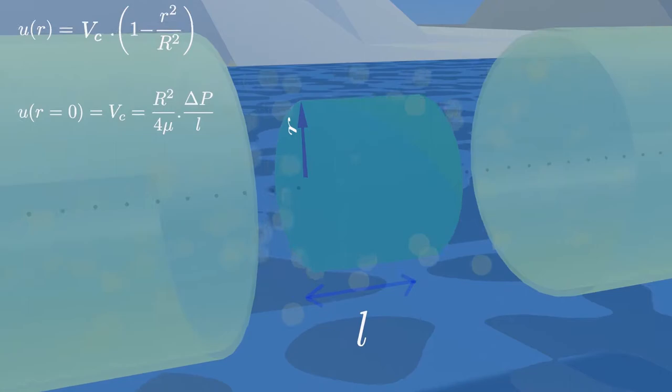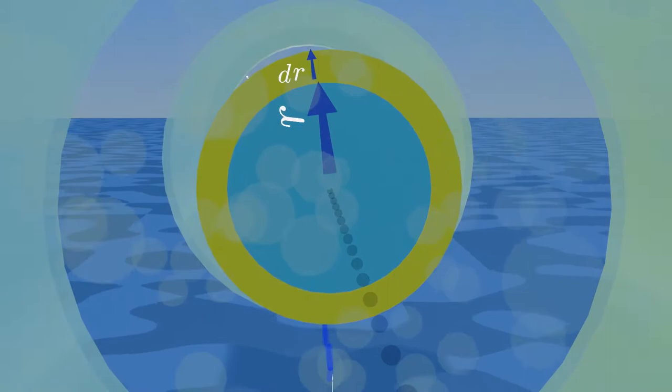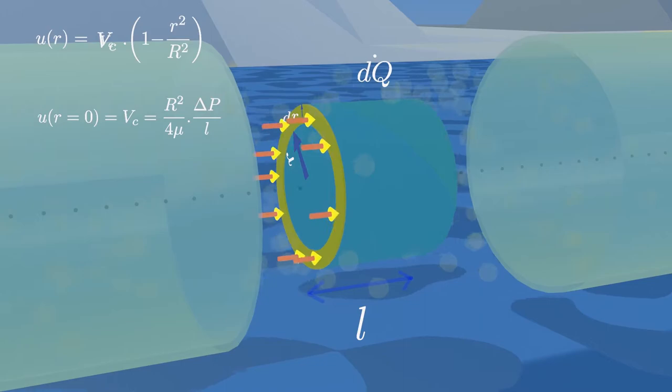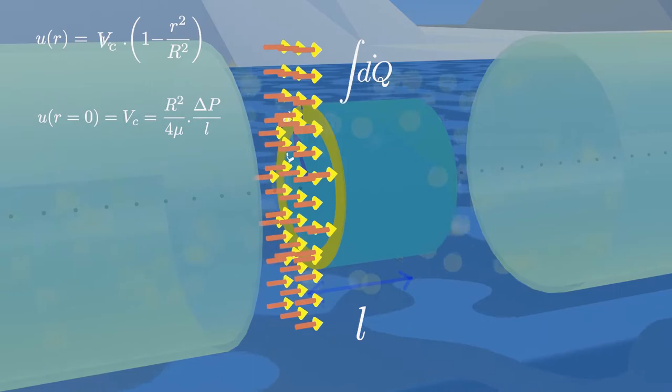Now, to derive the flow rate, we consider a ring with the infinitesimal thickness dr, at any distance r from the center of the pipe. We will find the volume flow rate through this infinitesimal thickness first, then the total volume flow rate can be attained by integration.